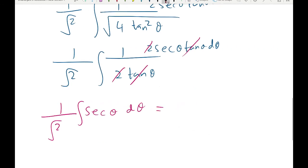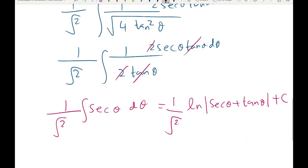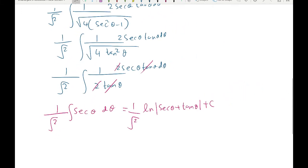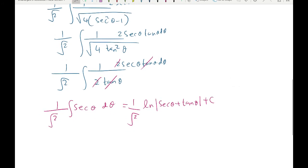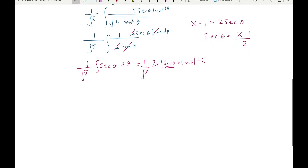The integral of secant θ is ln|secant θ + tangent θ|, so we get 1/√2 times ln|secant θ + tangent θ| + C. Now we need to rewrite the answer in terms of x. From our substitution, x minus 1 equals 2 secant θ, so secant θ equals (x minus 1)/2. We can directly replace secant θ with (x minus 1)/2. To find tangent θ, we draw a triangle.